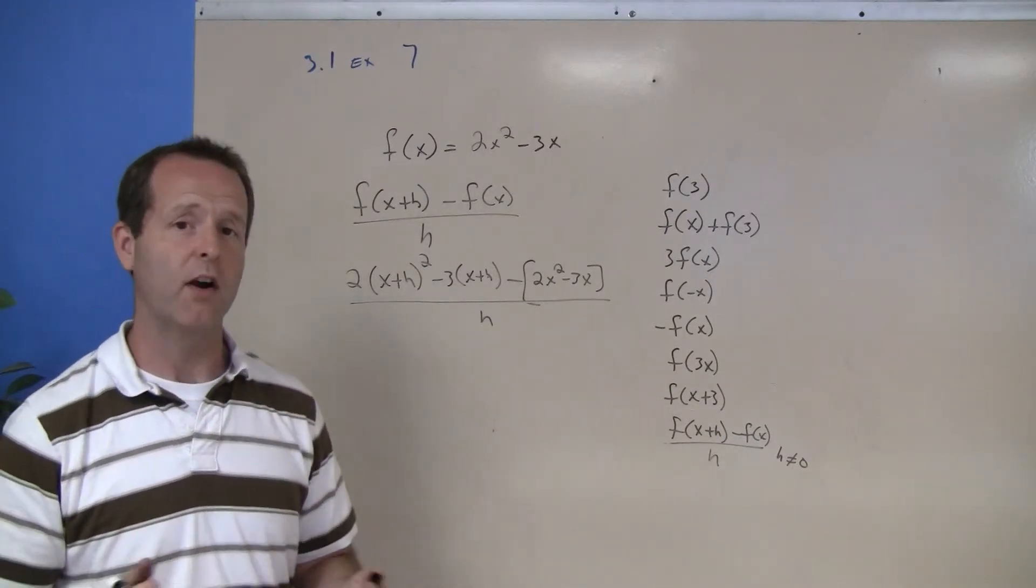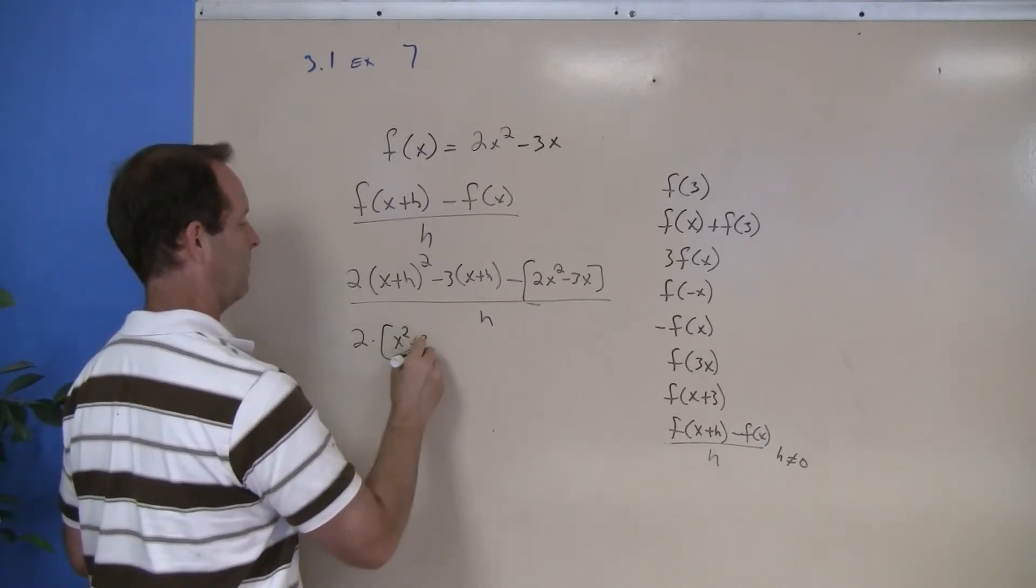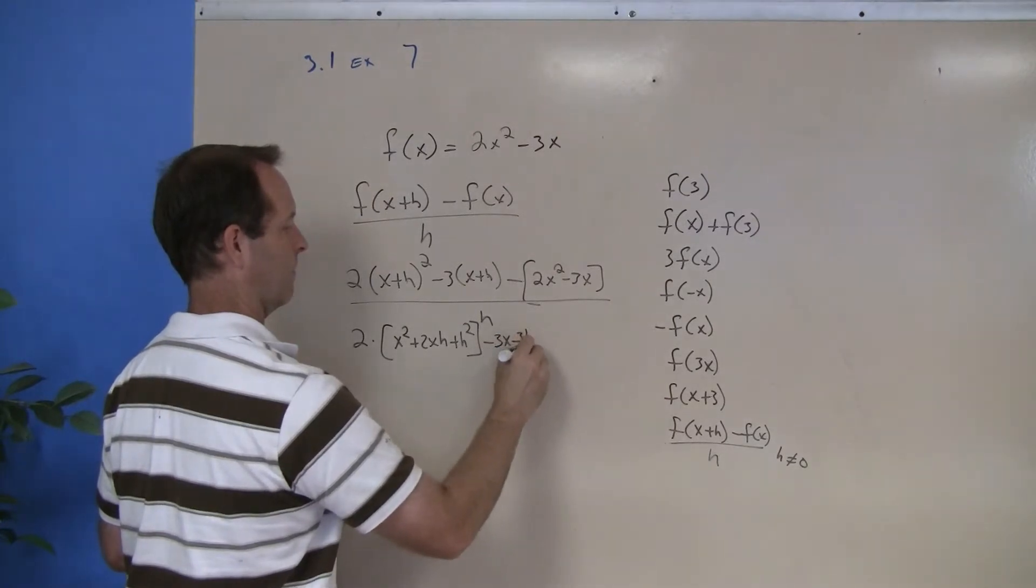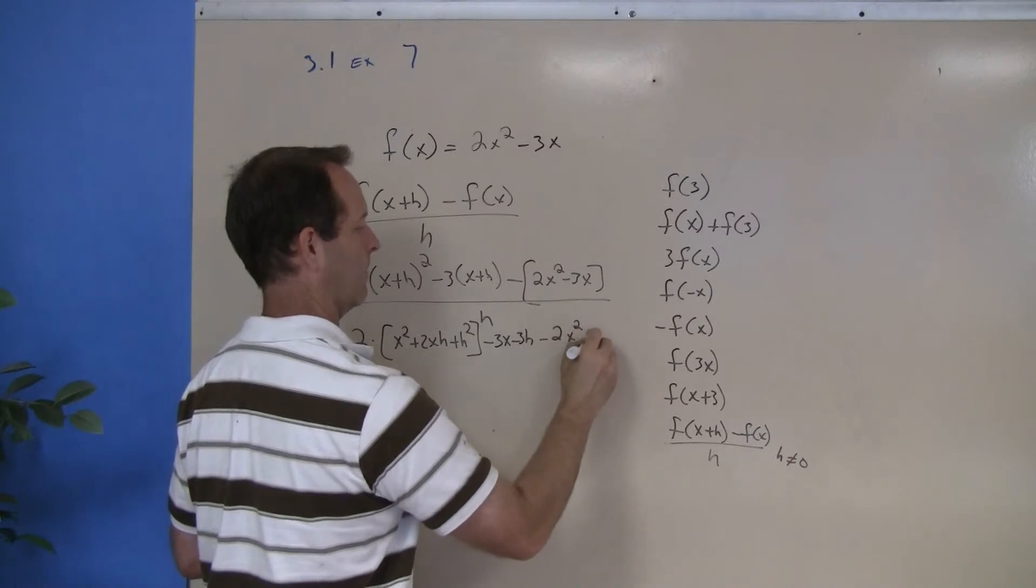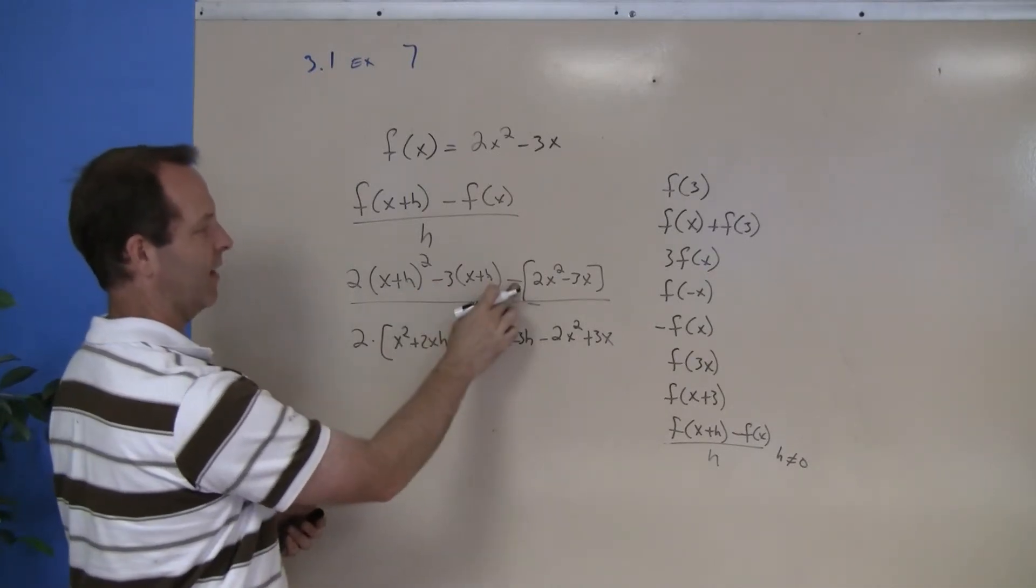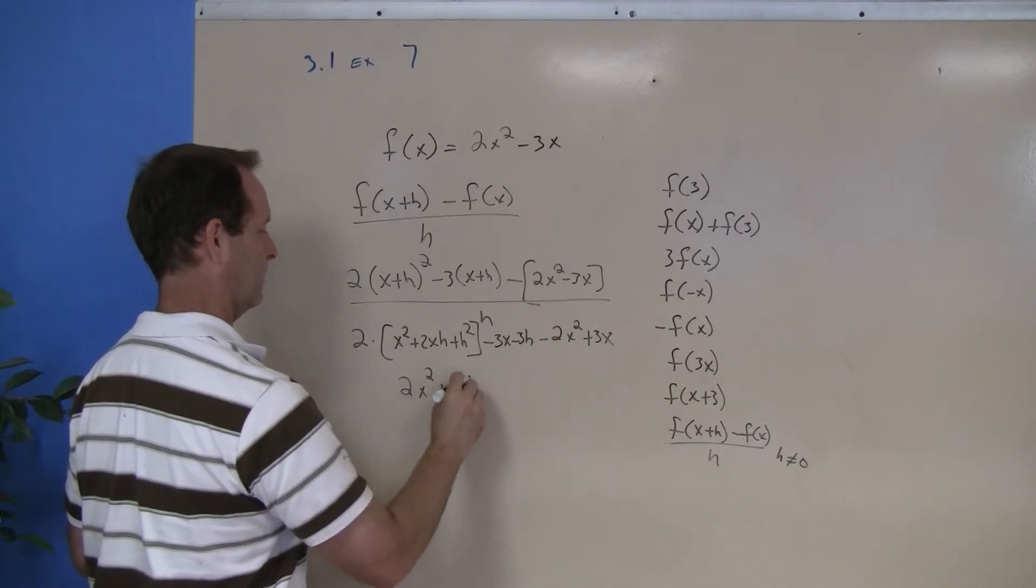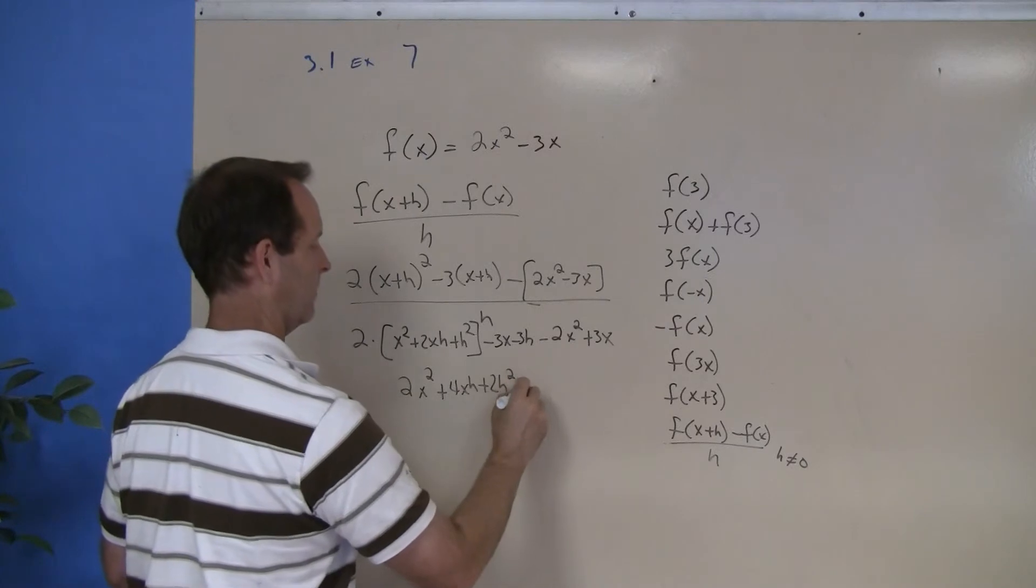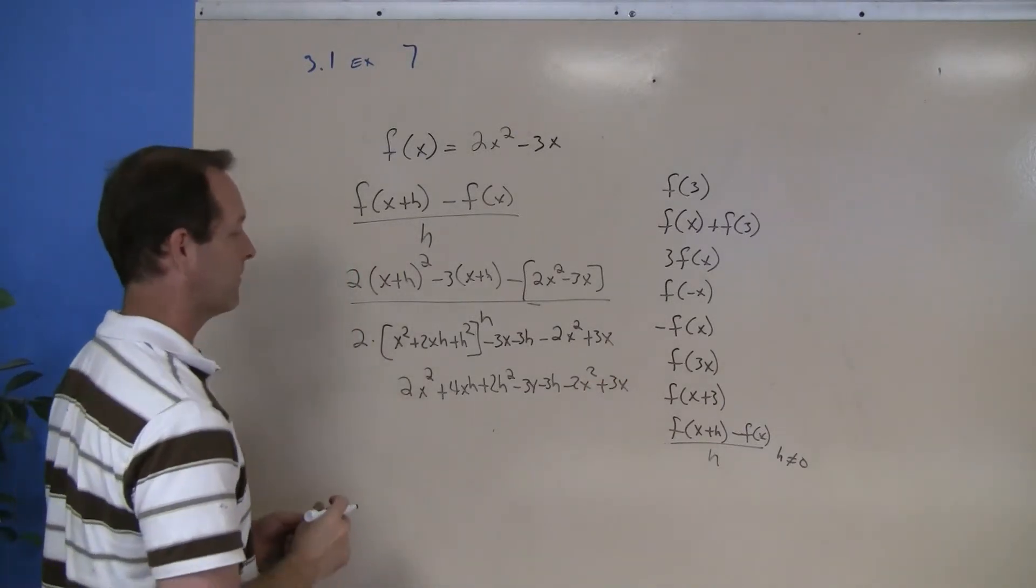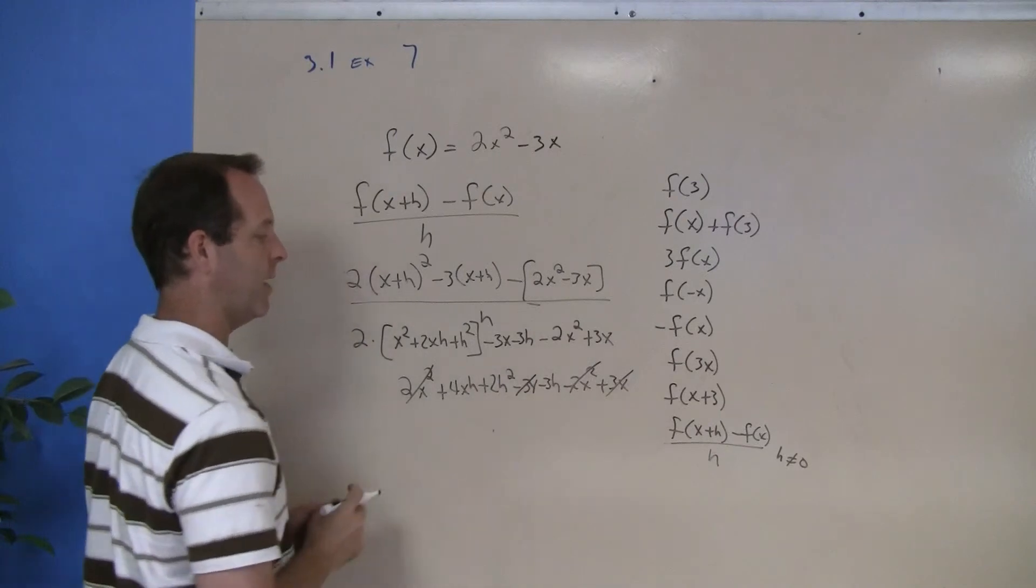All over h, and I just need to be very careful in how I reduce this problem down. 2 times (x plus h) squared. There's lots of places in this problem where I could have not distributed this negative through very, very good here and also here. Now I'm going to distribute that 2. I'm going to look for some like terms that I can add: 2x squared and negative 2x squared, they zero each other out; negative 3x and that 3x zero each other out.